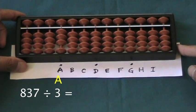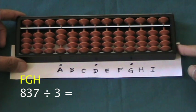We're going to set the dividend 837 on rods F, G, and H.